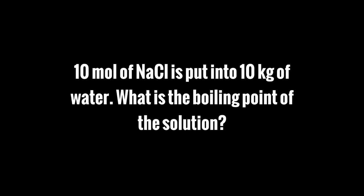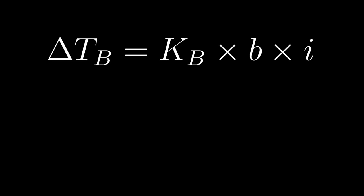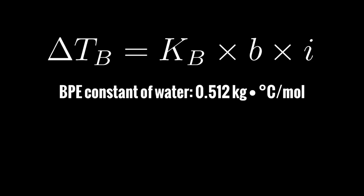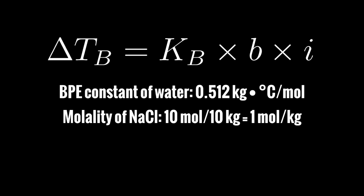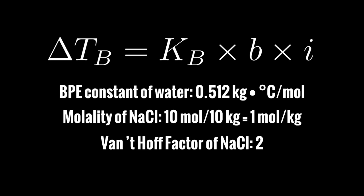Now that we know the values of all these constants, we can put this to use and do a problem. 10 moles of NaCl is put into 10 kilograms of water — what is the boiling point of this new solution? All we have to do is use our equation. Delta T sub B is our Boiling Point Elevation. K sub B is our BPE constant of water, which is 0.512 kilograms degrees Celsius per mole. The molality of NaCl is 10 moles per 10 kilograms, which is 1 mole per kilogram. The Van't Hoff factor of NaCl is 2.